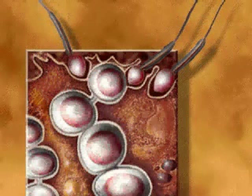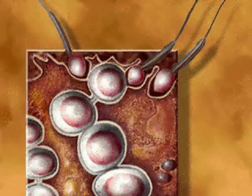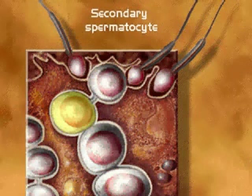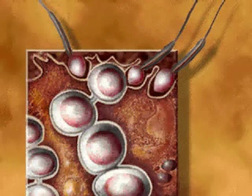A spermatogonium deep in the epithelium of the seminiferous tubules gives rise to a primary spermatocyte. This cell contains 46 chromosomes. A primary spermatocyte undergoes the first meiotic division, producing two identical secondary spermatocytes. Each secondary spermatocyte contains 23 chromosomes.